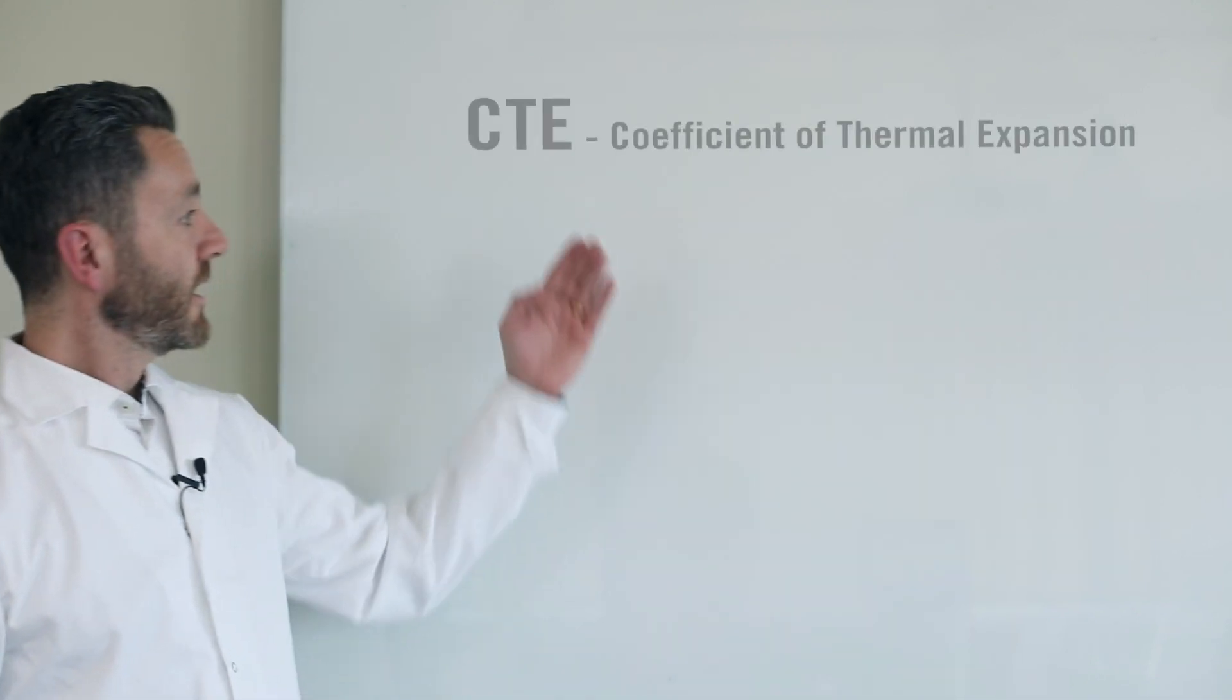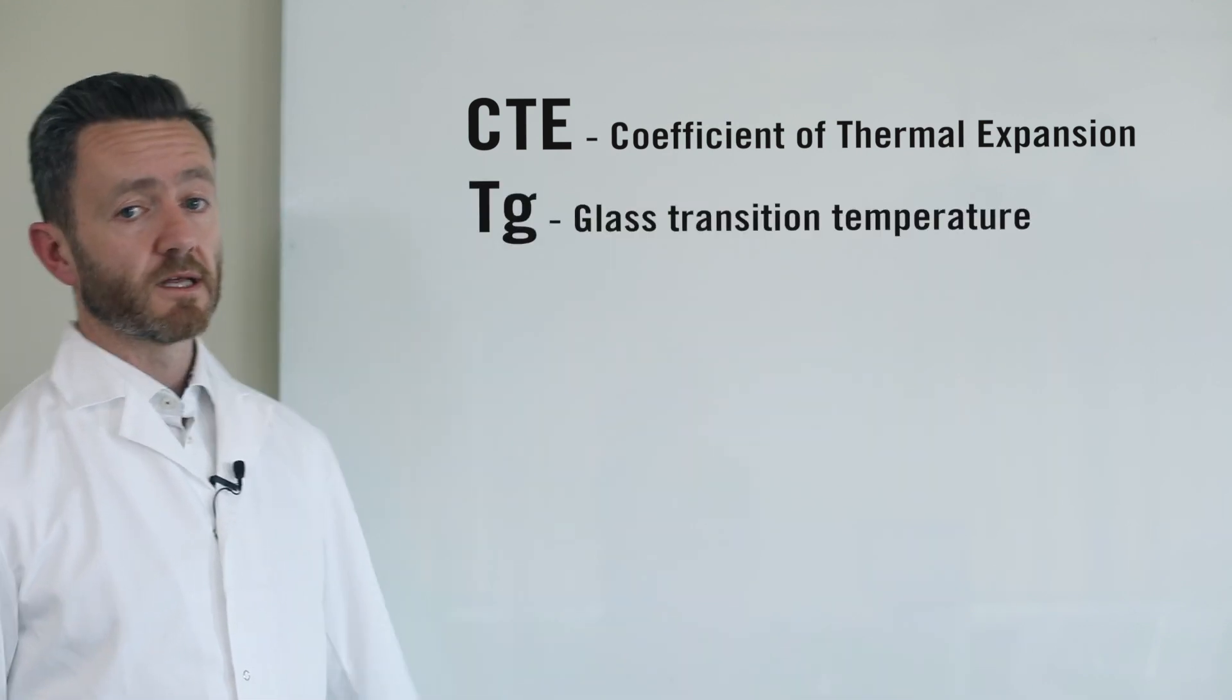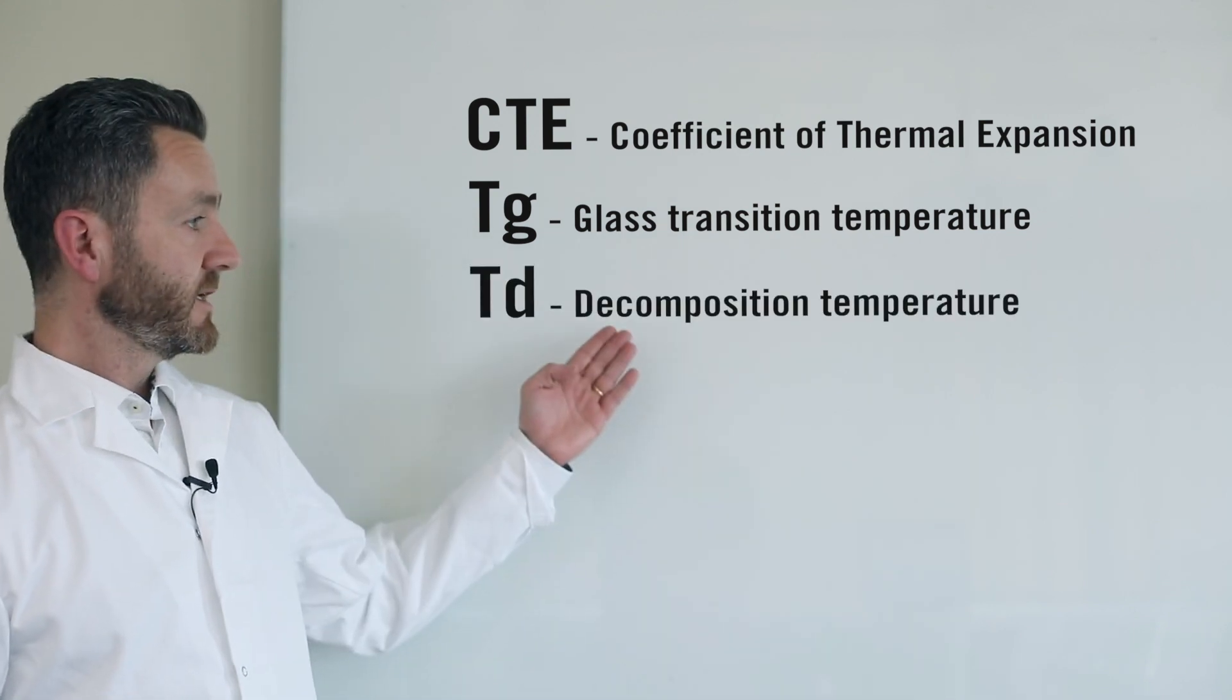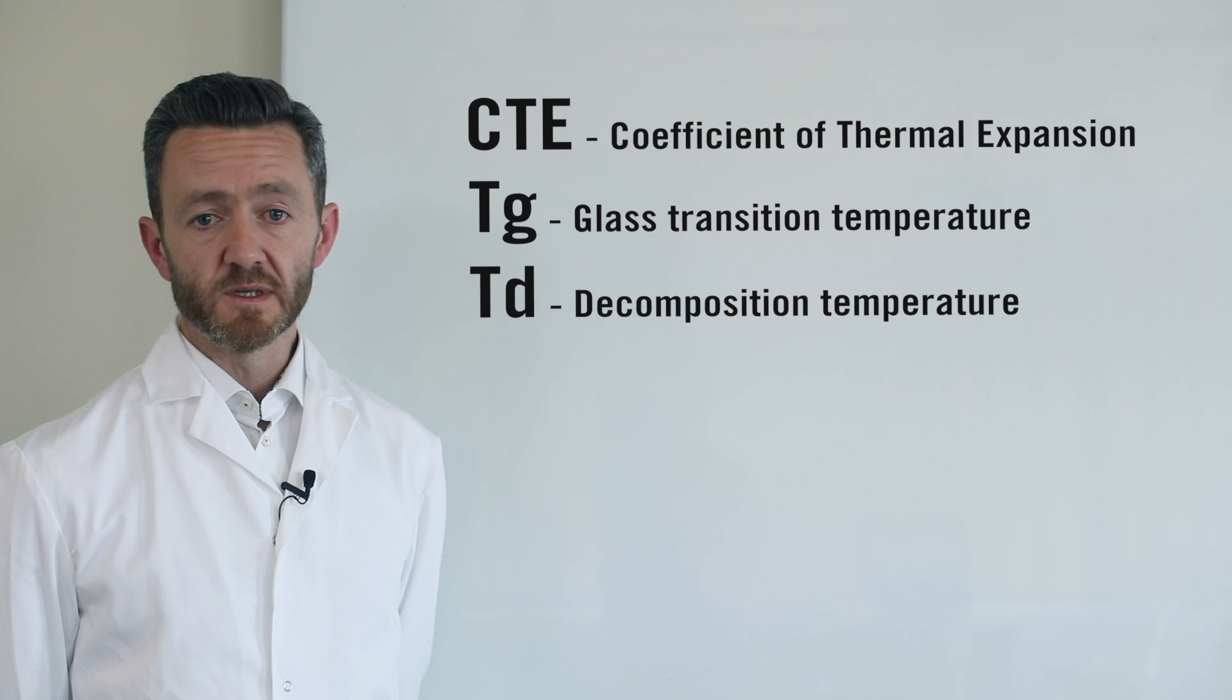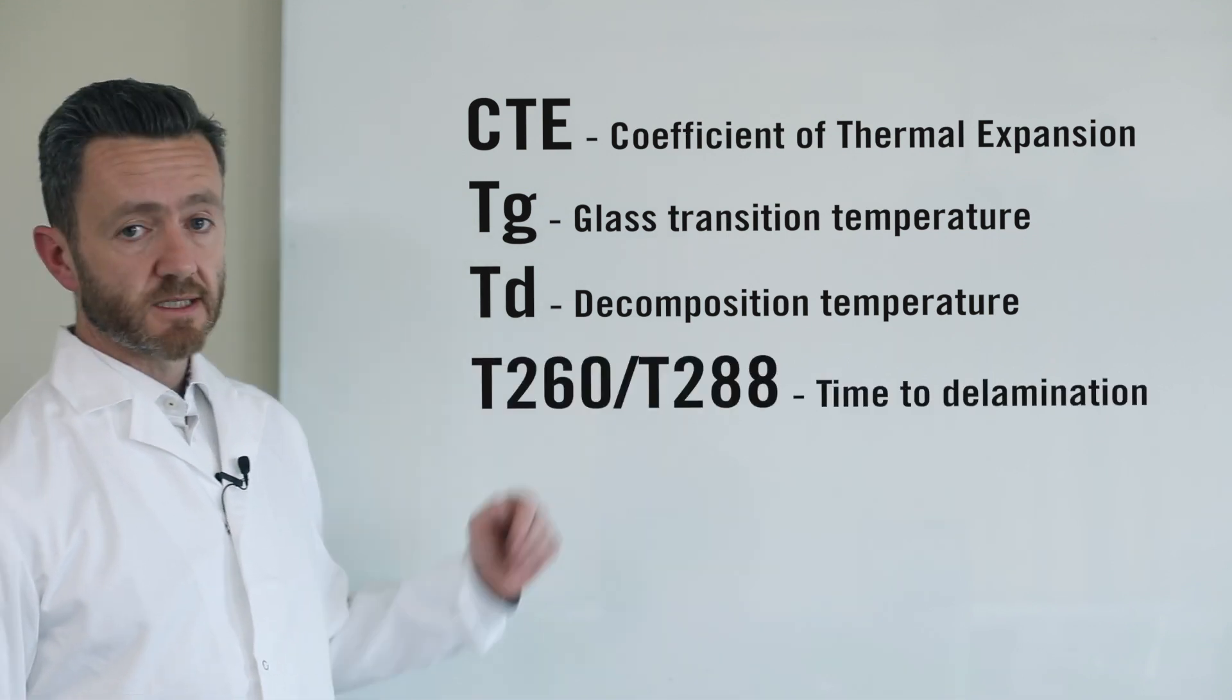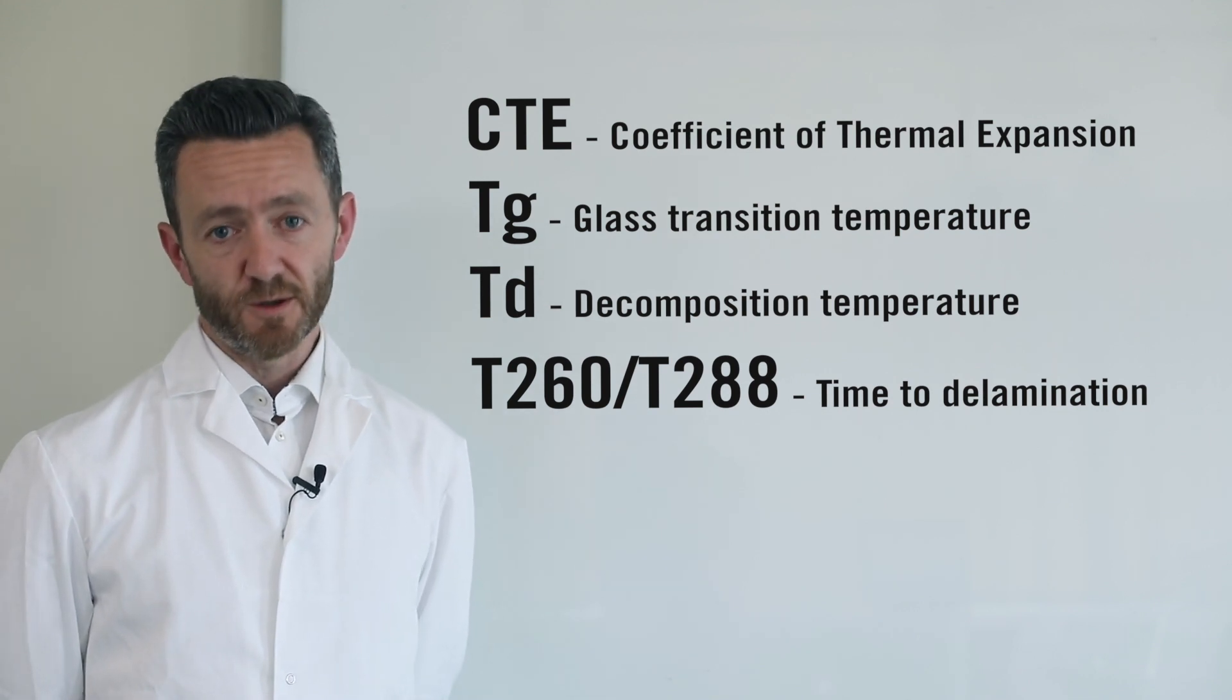The four most common characteristics often referenced in material selection outside of electrical properties and also contained within the IPC 4101 specification are CTE, which is the coefficient of thermal expansion. We then have Tg, which is the glass transition temperature of the material. TD, which is the decomposition temperature of the material. And finally T260 and T288, which is the time to delamination at those temperatures.